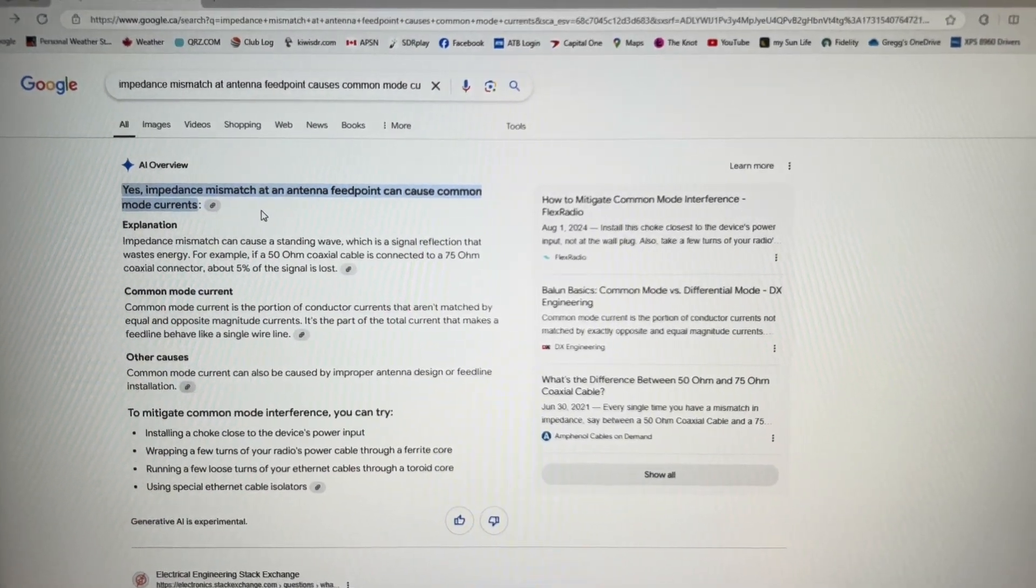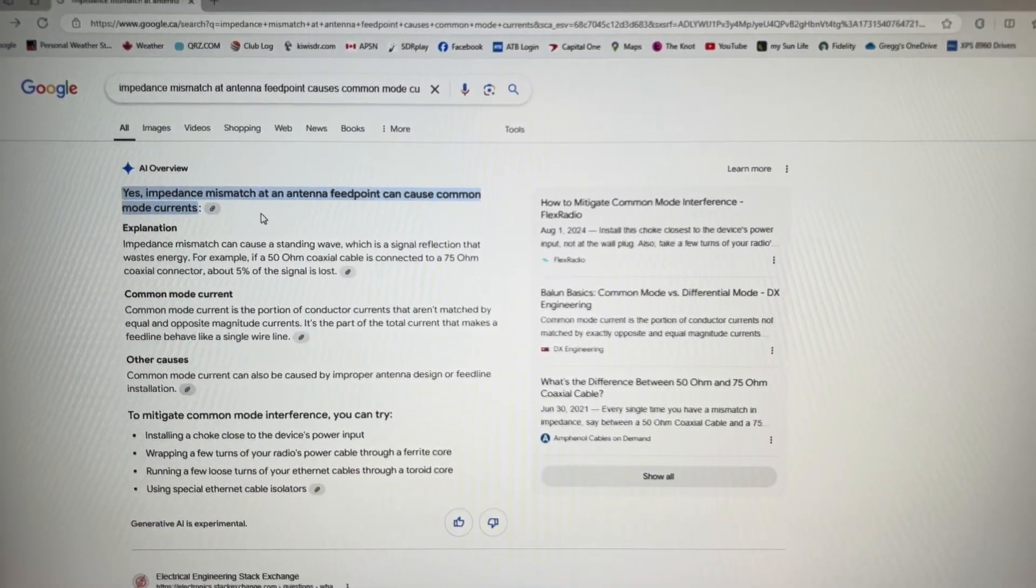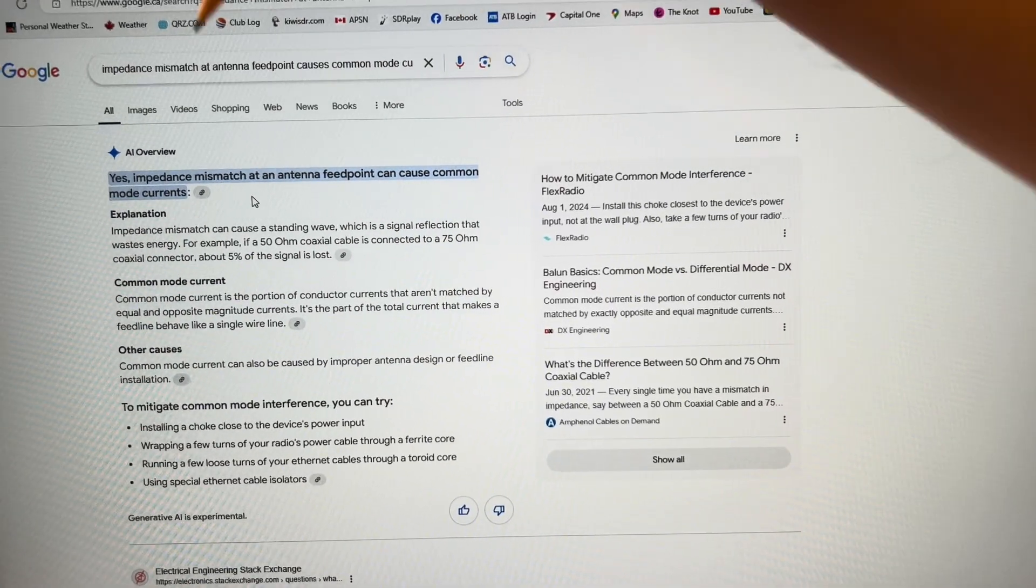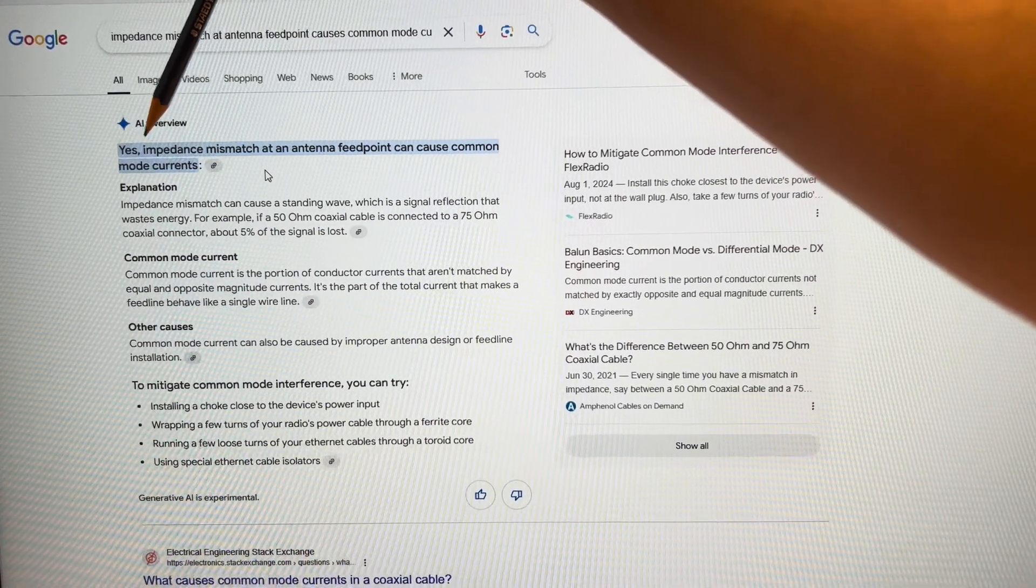Does an impedance mismatch at the antenna feed point cause common mode currents to flow on the outside of the shield of your coaxial cable? Google's AI says yes.